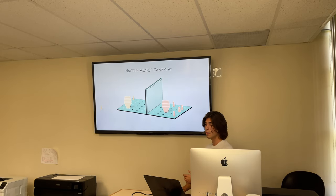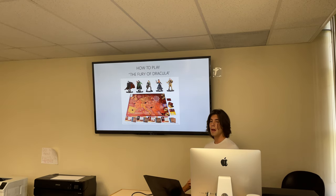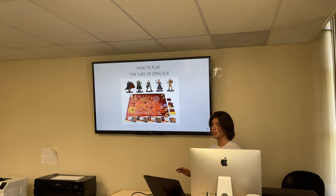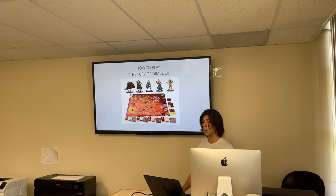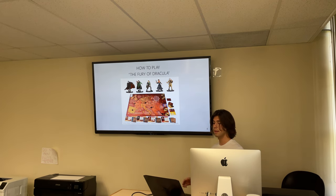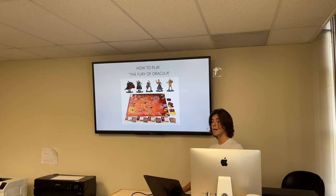Now let's get into a more complex version of the hidden movement mechanic in a game called the Fury of Dracula. This is a more mature game — much longer in gameplay with more components to the hidden movement mechanic. There are five total characters; it is a four-versus-one player game set in 19th century Europe, where four vampire hunters are searching for and trying to kill Dracula. The four vampire hunters' only objective is to find and kill Dracula, while Dracula has the hidden movement ability — the other players cannot see where he moves. His only objective is to survive and create as many vampires as possible.